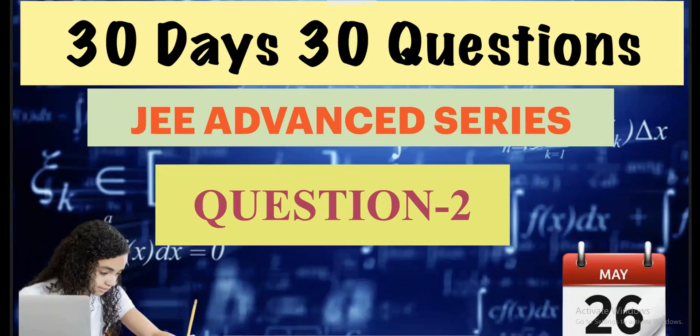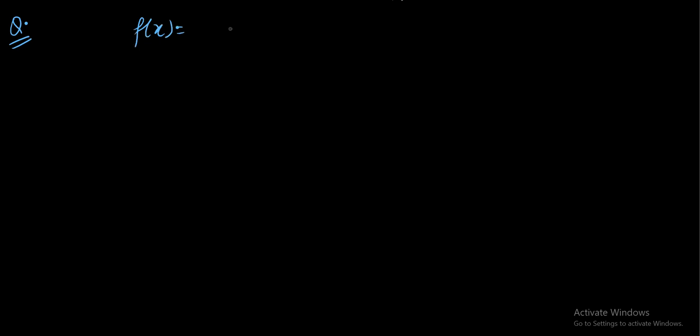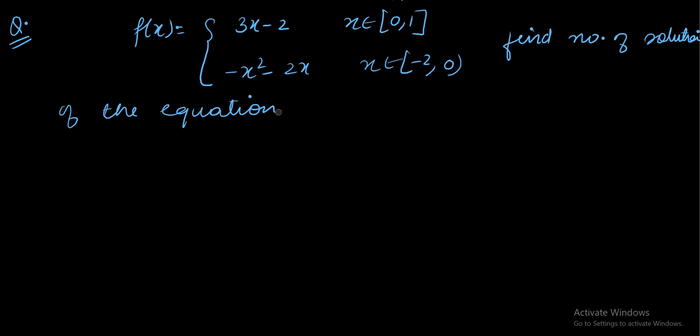Hello everyone and welcome back. This is question 2 in 30 days 30 questions JE advanced series. Let us see what is the question. The question is: let f(x) equals 3x minus 2 for x belonging to closed interval [0,1], and it is minus x squared minus 2x for x belonging to [-2, 0). Now the question says find number of solutions of the equation fractional part of f(f(x)) equals 1 by 2. Did you notice I am taking the composition here, and its fractional part should be equals to 1 by 2. How to solve this question?